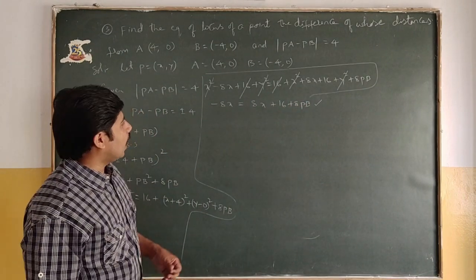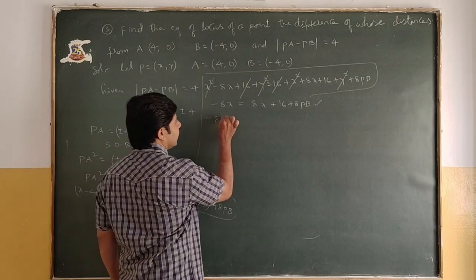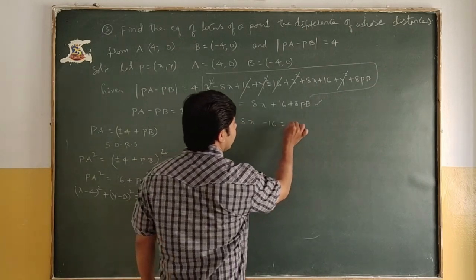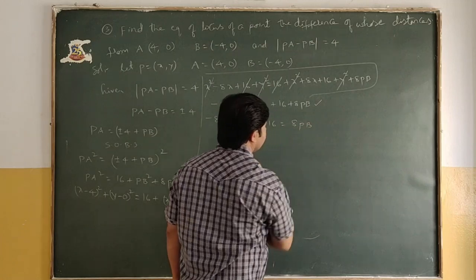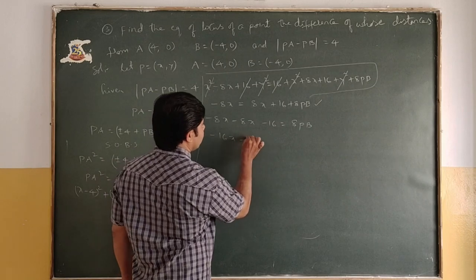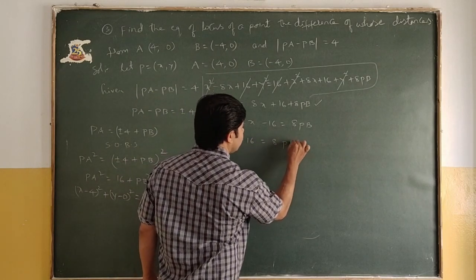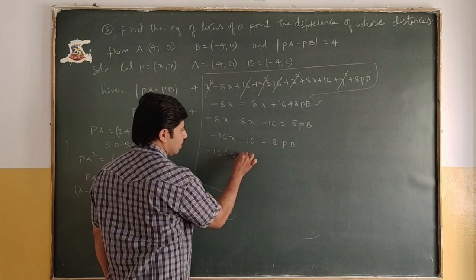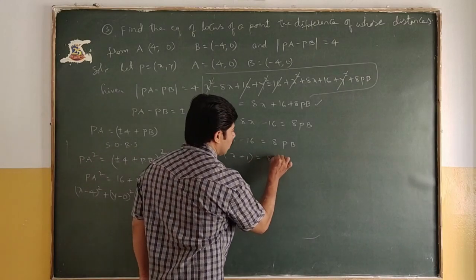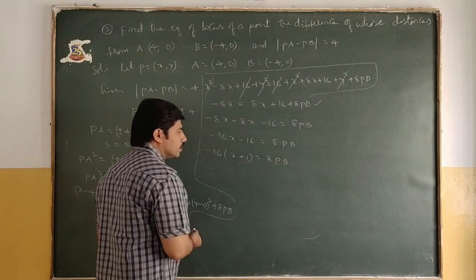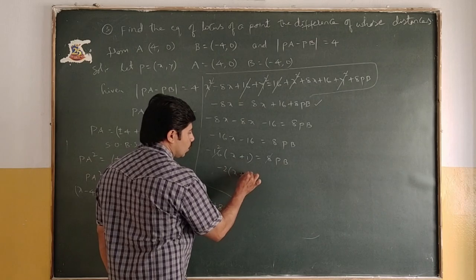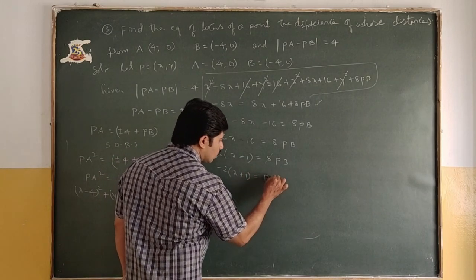Simplifying: -16x - 16 = 8·PB. Taking -16 as common: -16(x+1) = 8·PB. Cancelling: -2(x+1) = PB. Now squaring both sides: 4(x+1)² = PB².